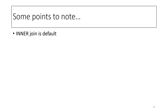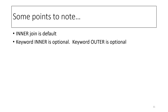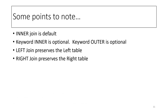Some points to note: inner join is the default, and so the keyword INNER is optional. The keyword OUTER is also optional. Left join preserves the left table, right join preserves the right table, and full join preserves both tables.